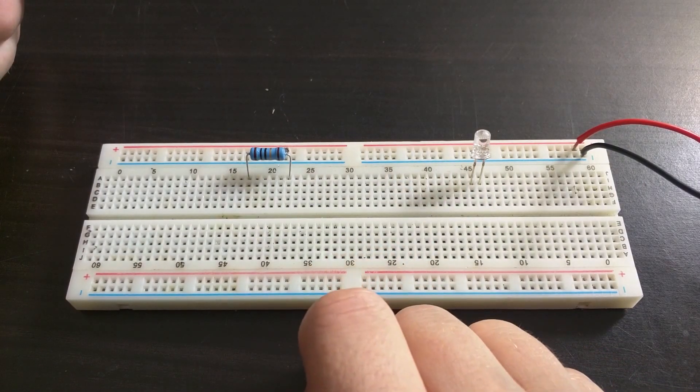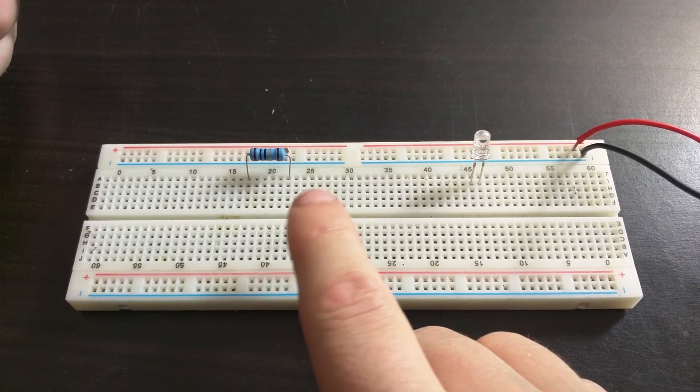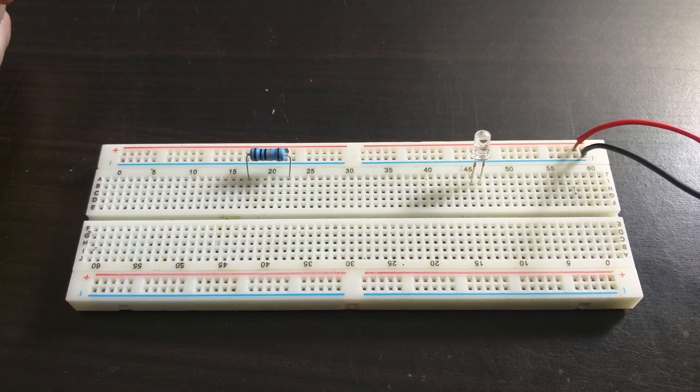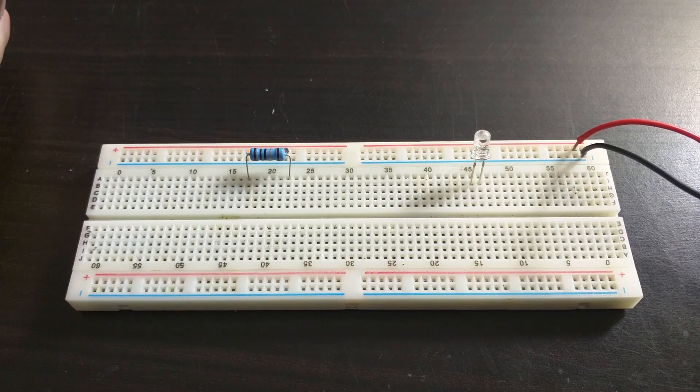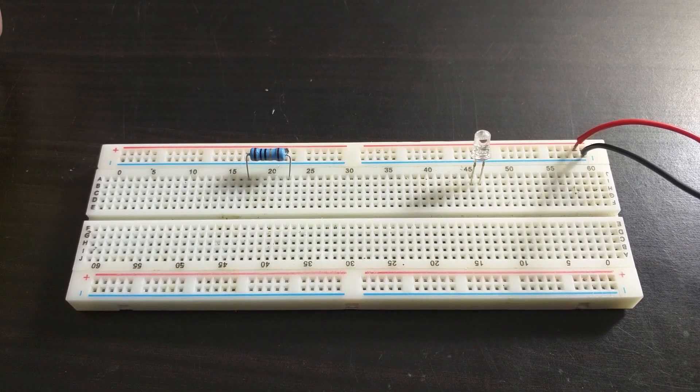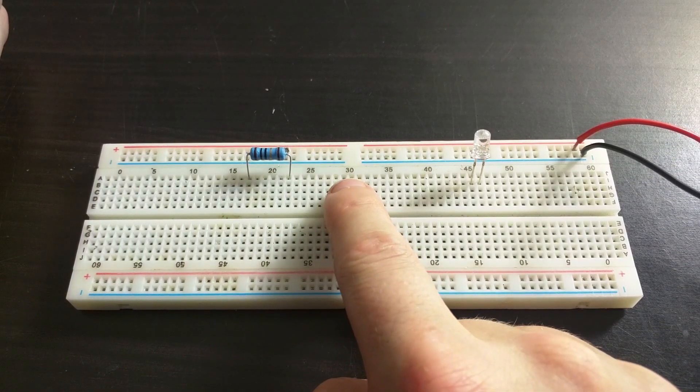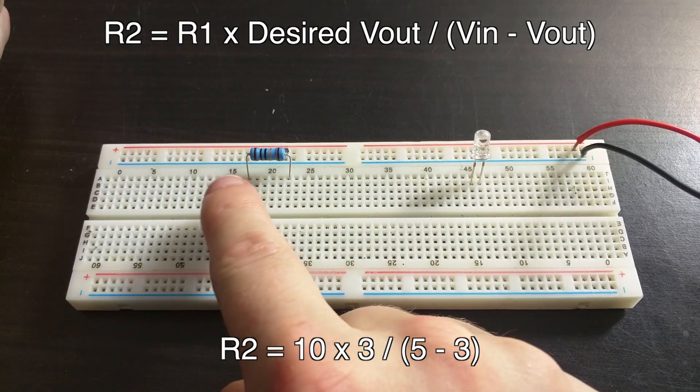To calculate what resistor 2 should be in order to drop 3 volts across it, I need to use the equation that was featured in the voltage dividers basics video. The equation I stated was that resistor 2, which is the resistor we require, is equal to resistor 1, which I have chosen as 10 ohms, times the desired voltage out.